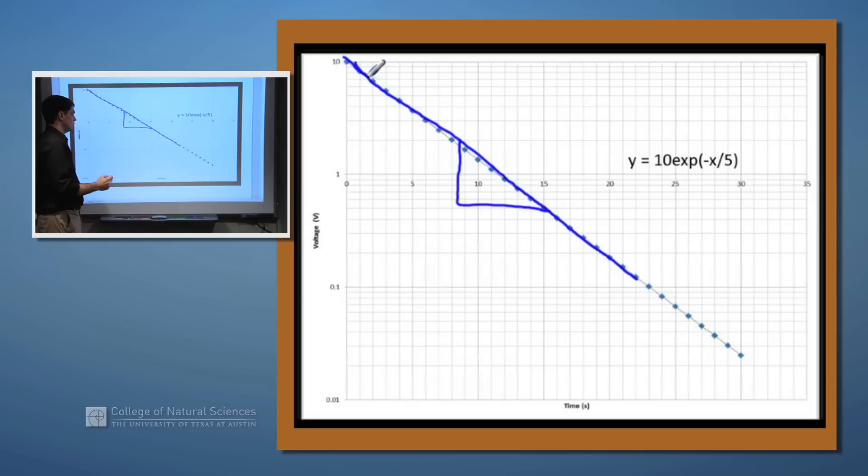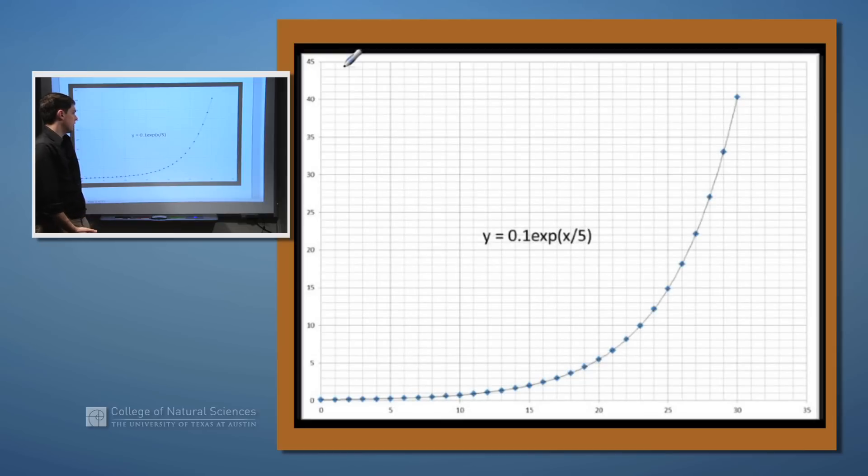The one thing that we changed, you'll notice that on the bottom the time is still in increments. We still go out to about 30 seconds in this graph. However, you'll notice that the voltage instead of being linear starts off at 0.01, goes up to 0.1, 1, and 10, and we do these increments of 10, increasing by a power of 10 for each interval that we go up. That works for an exponential decay.